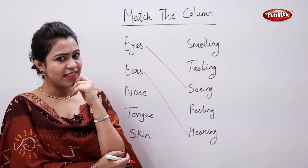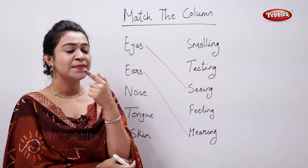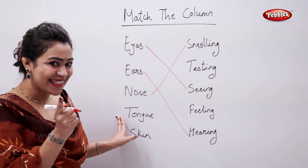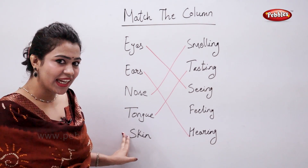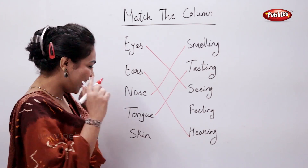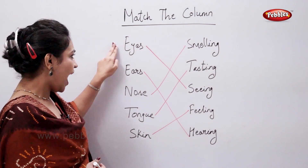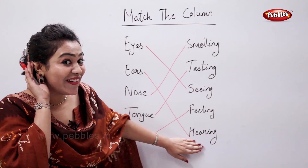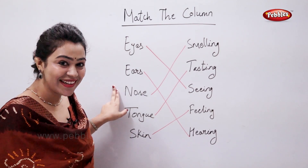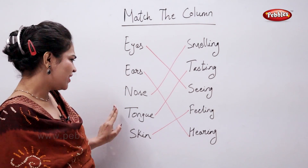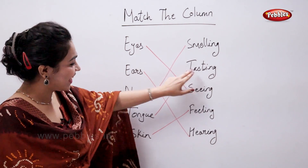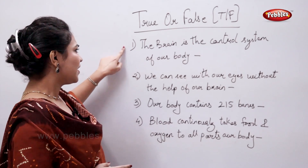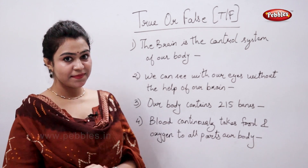Nose — what is the function of nose? Yes, smelling. Tongue — tasting. And skin — feeling. Correct! So: eyes for seeing, ears for hearing, nose for smelling, tongue for tasting, and skin for feeling.